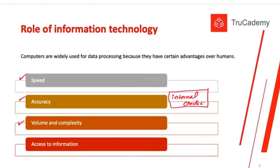After that, volume and complexity — computers can process a much bigger volume of data much more quickly compared to humans. Maybe to process a particular transaction a human might need one hour, but a computer might do it in a minute. And access to information — we can provide much greater access to a computer system compared to humans, partly because of confidentiality issues. If data is processed by a human, there is always a chance that data could be misled or misused in some way, but with a computer system we do not have that risk.